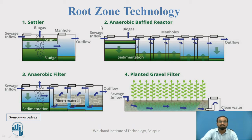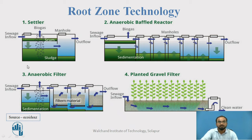In the second compartment, the anaerobic baffled reactor, the same anaerobic digestion process continues, with various digesters arranged in series. The outflow supernatant from the last digester is taken to the anaerobic filter, where the same process occurs with one change: if any suspended particles remain in the supernatant, they are removed by a filtration system.